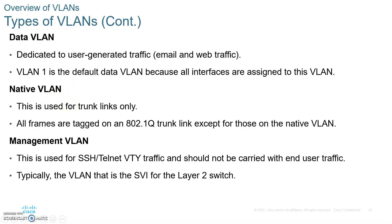Now let's talk about the native VLAN. Incoming untagged frames from a trunk will be sent into the native VLAN. By default, VLAN 1 is the native VLAN. A trunk is when you're connecting two switches together — each physical switch has multiple VLANs in it. Every frame traveling on the trunk will have a tag telling it which VLAN it's going to. Frames from the native VLAN will not be tagged. Both ends of the trunk must be configured with the same native VLAN.